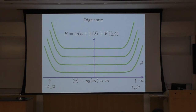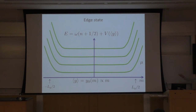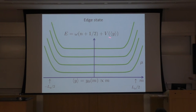Now let's put chemical potential somewhere. If I put chemical potential here, all bands below this point are occupied and above it are unoccupied. Is this a conductor or an insulator? It's a conductor. Why? Because if I take electrons near the Fermi energy, near mu, I can excite them easily with very low cost. So the system is conducting near the edge, but inside the bulk it's still an insulator.